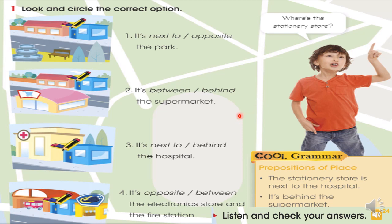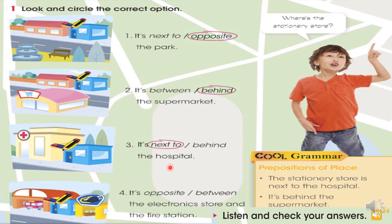Primero van a circular la respuesta correcta antes de escuchar el audio. Luego van a continuar con el audio. Pay attention and listen please. Track 24. 1. Where is the stationery store? It's opposite the park. 2. Where is the stationery store? It's behind the supermarket. 3. Where is the stationery store? It's next to the hospital. 4. Where is the stationery store? It's between the electronic store and the fire station.